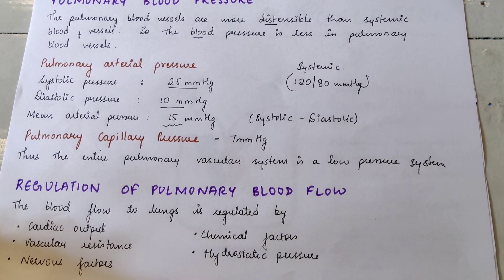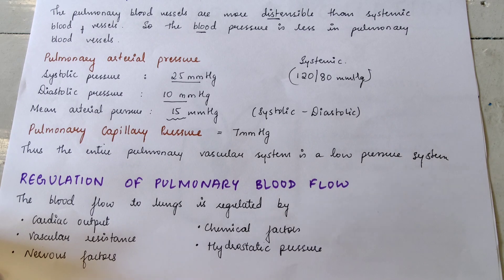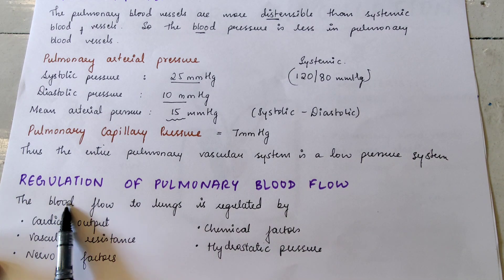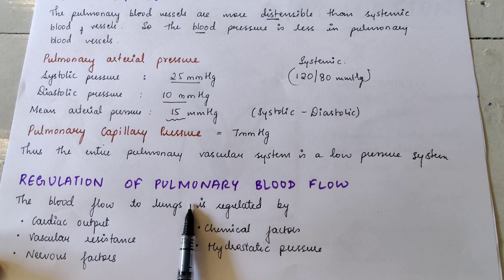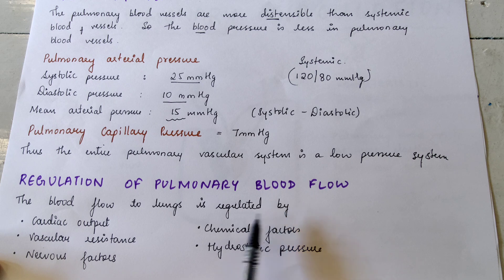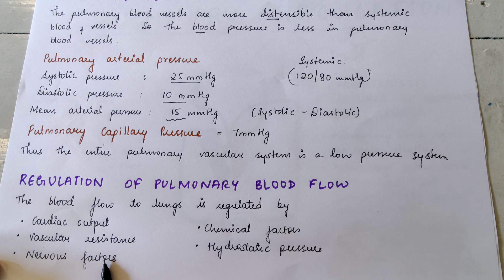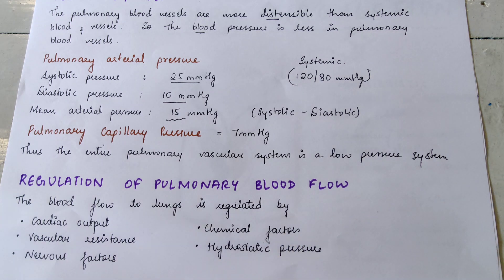Now let's understand what factors actually regulate blood flow. The blood flow to the lungs is regulated by cardiac output, vascular resistance, nervous factors, chemical factors, and hydrostatic pressures.